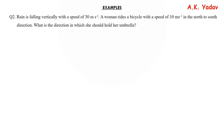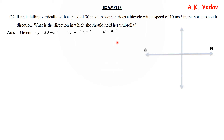Let's move to Question 2: Rain is falling vertically with a speed of 30 m/s. A woman rides a bicycle with a speed of 10 m/s in the north-to-south direction. What is the direction in which she should hold her umbrella? It is similar to the previous question. Given: velocity of rain = 30 m/s, velocity of woman = 10 m/s, angle = 90°. Since it is north-south, this is the velocity of rain which is vertically downwards, and this is the velocity of the woman.